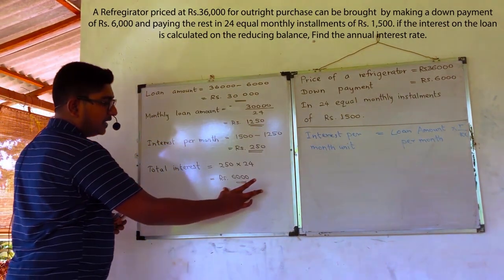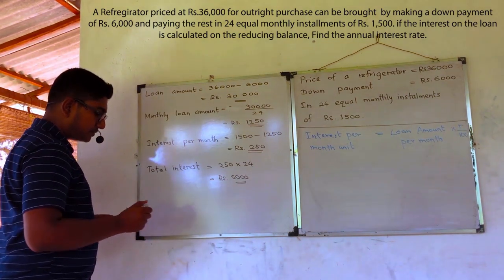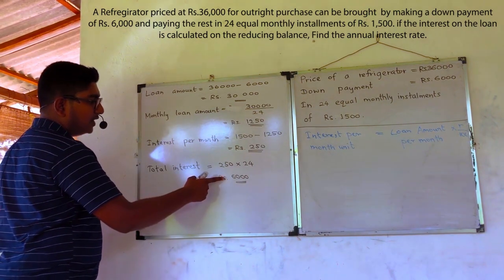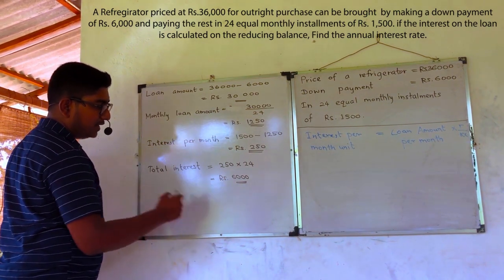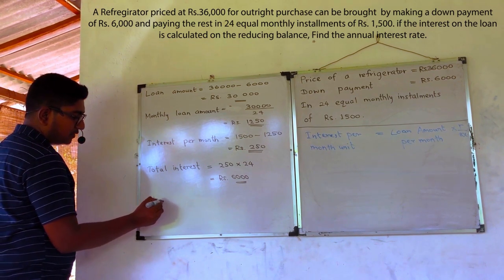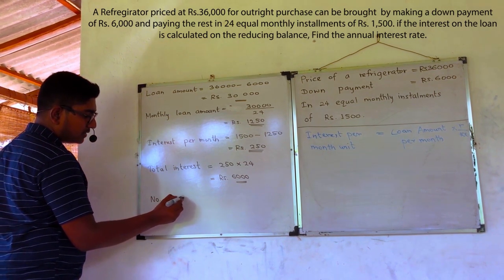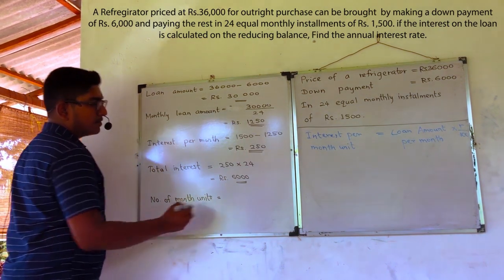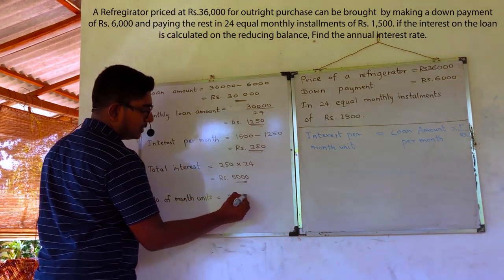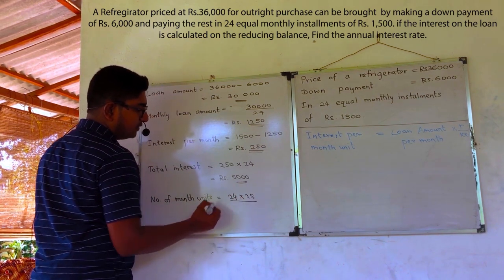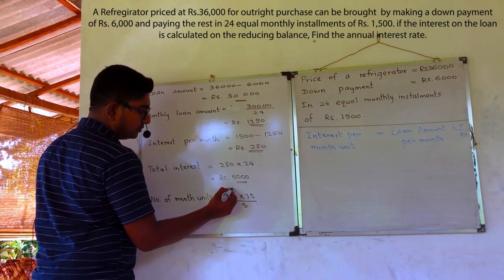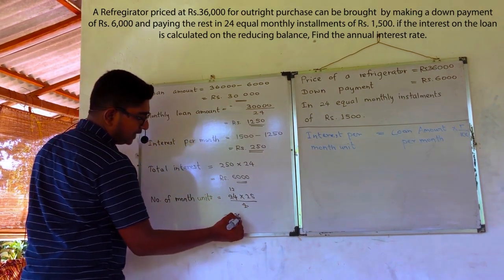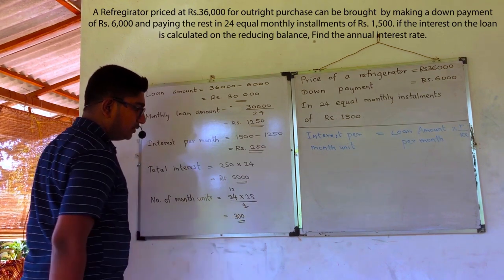Now, we have the total interest, which is 6000. To calculate interest per month unit, we have to divide the total interest by the number of month units. Before that, we have to calculate the number of month units: 24 multiplied by 25, divided by 2. We get 300 month units.